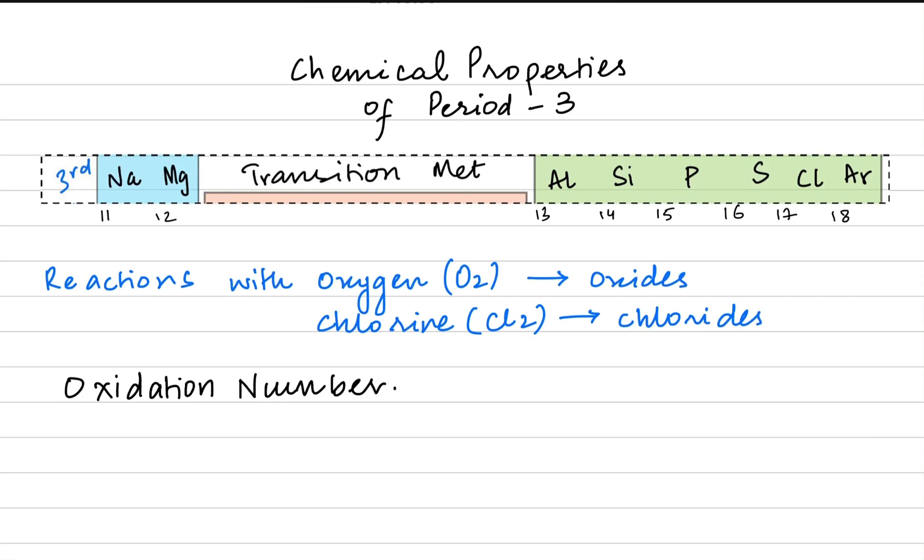But first we'll talk about their oxidation numbers. We know oxidation numbers represent whether they are gaining electrons when they react or losing electrons. Because that will help us in creating the formula of their oxides and their chlorides. Sodium is +1, Magnesium is +2, Aluminium +3, Silicon +4, Phosphorus, Sulphur and Chlorine are -3, -2 and -1 respectively.